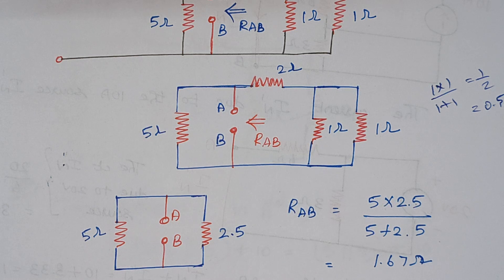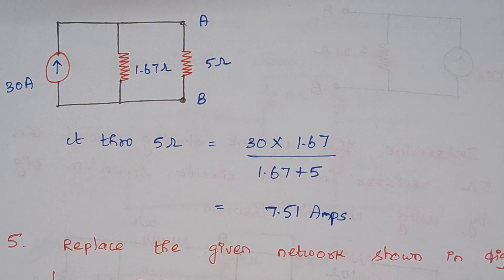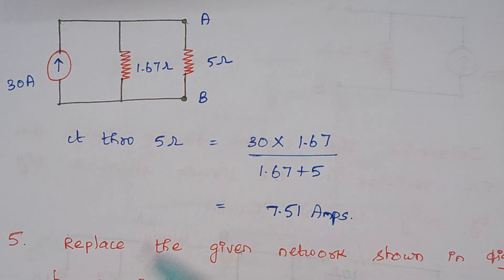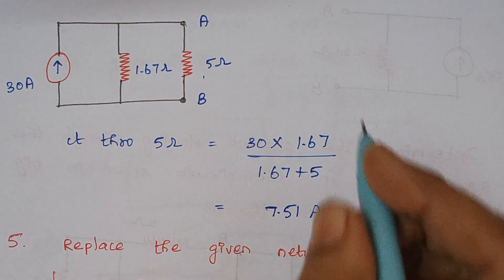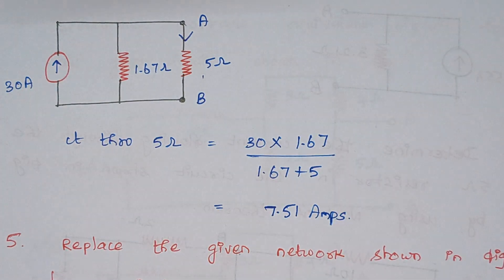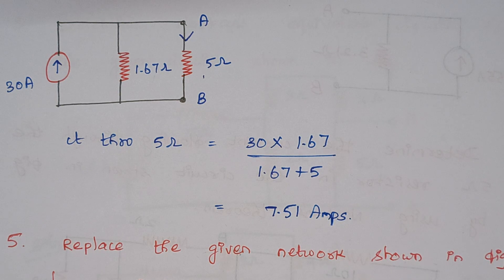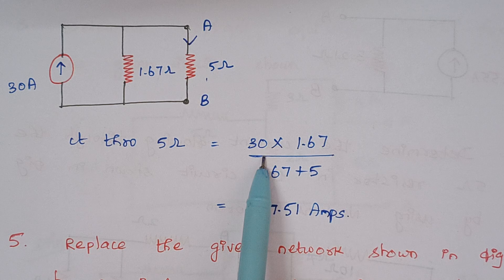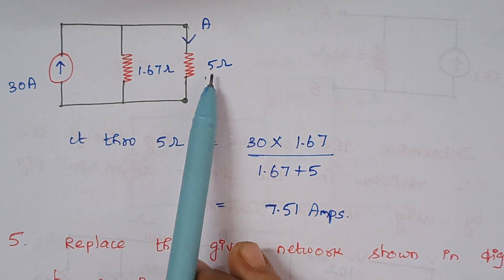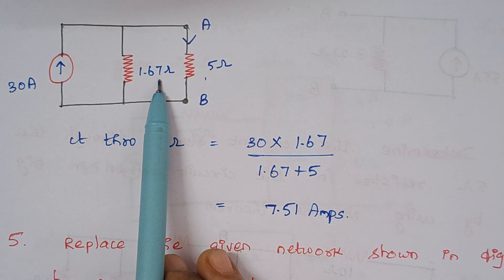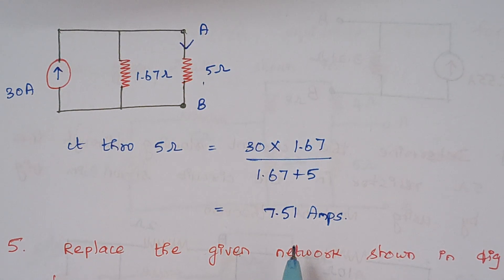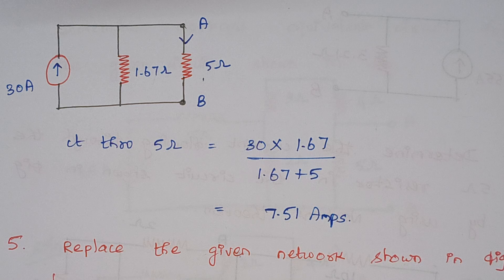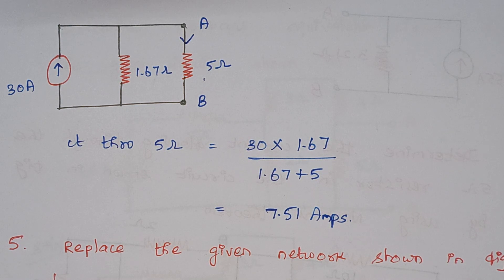We have now calculated the short circuit current and the Thevenin resistance. The next step is to draw Norton's equivalent circuit. This is your current, this is your resistance, and this is your load resistance. The problem asks us to calculate the current that flows through this 5 ohm resistance, so we use the current division formula: total current times opposite resistance. The resistance opposite to the 5 ohm is 1.67, divided by the total resistance. The final answer is 7.51 amps. This problem is done; we will move to the next one.